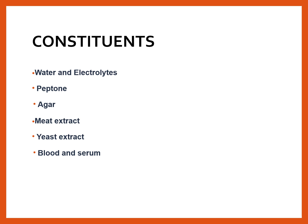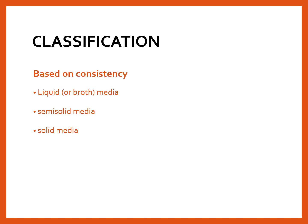Another constituent is meat extract, which is added when making nutrient broth to provide nutrition — usually made from beef. Then yeast extract, which is also an important constituent. Blood and serum can also be added in certain conditions, depending on the requirement of the organism. So mainly: water, electrolytes, peptone, agar if solid media is needed, and meat extract and yeast extract — these are the main constituents of culture media.